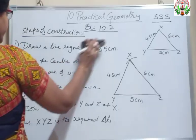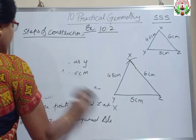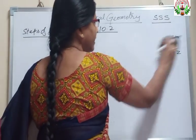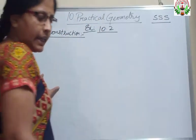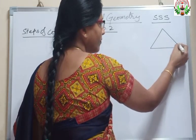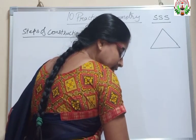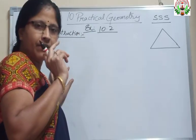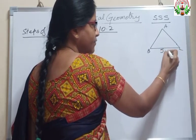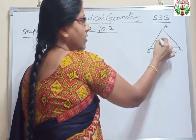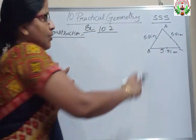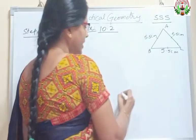Let us go for our second question. Here it is given as an equilateral triangle — we have to construct an equilateral triangle. We know that for an equilateral triangle, all three sides are equal. Let us draw a rough figure. They have asked you to construct an equilateral triangle of side 5.5 cm. Let us name it as A, B and C. Since all three sides are equal, all sides are 5.5 cm. First step: draw a line segment BC of 5.5 cm using your ruler and pencil.